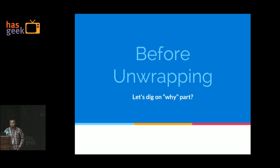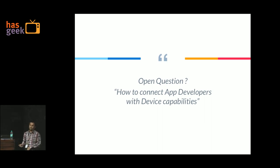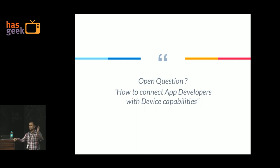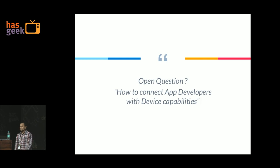Before going into what SDK add-ons are and why we should use them, how many of you have written apps that are OEM-specific or use OEM features? How do you use that — do you take the entire SDK from the OEM vendor, or just take some libraries? What is the general traditional scenario you have followed till now?